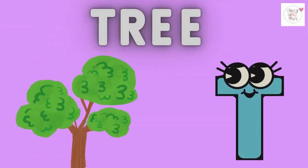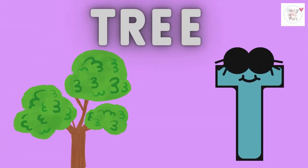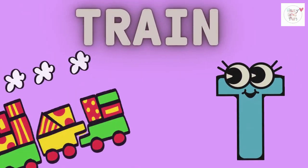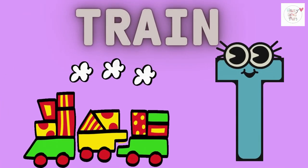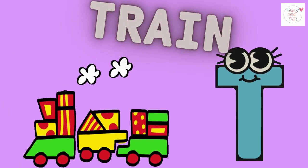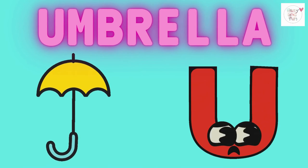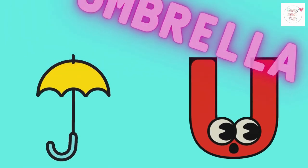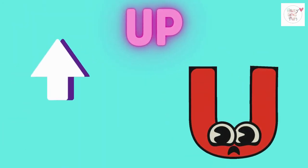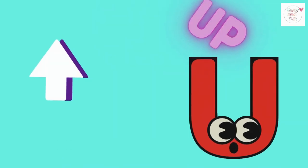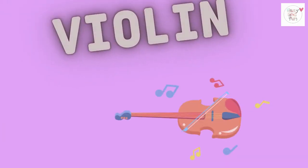T is for tree, t-t-tree. T is for train, t-t-train. U is for umbrella, u-u-umbrella. U is for up, u-u-up.